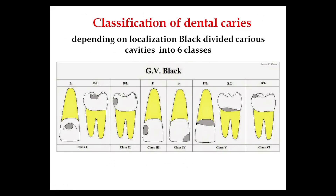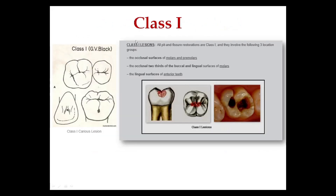The next classification is according to Black, based on localization. Black divided caries cavities originally into five classes, later expanded to six. We now use the six-class classification according to Black.